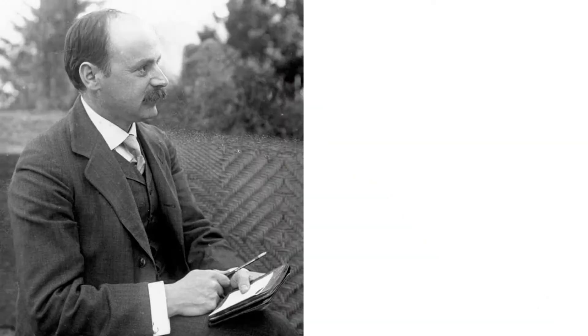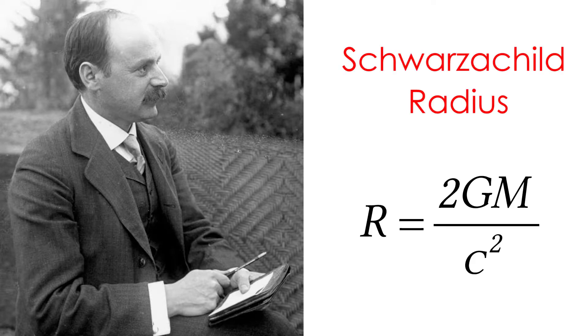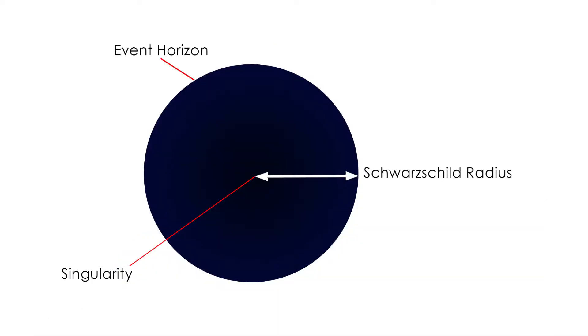To define this: in 1916, a German astronomer introduced the Schwarzschild radius. If an object has a ball shape and is compressed to that radius, it is a black hole.